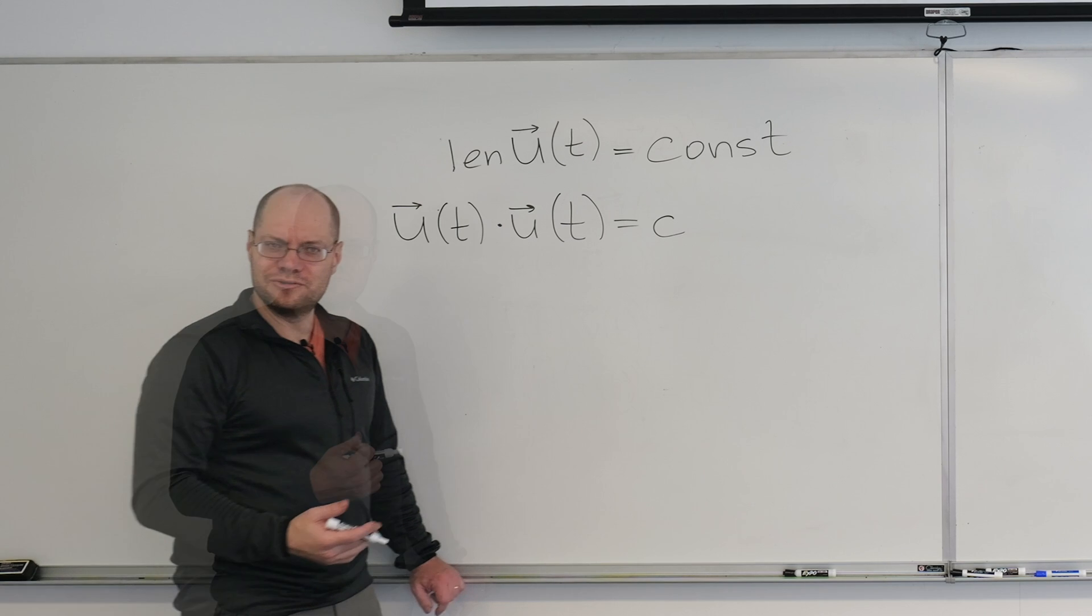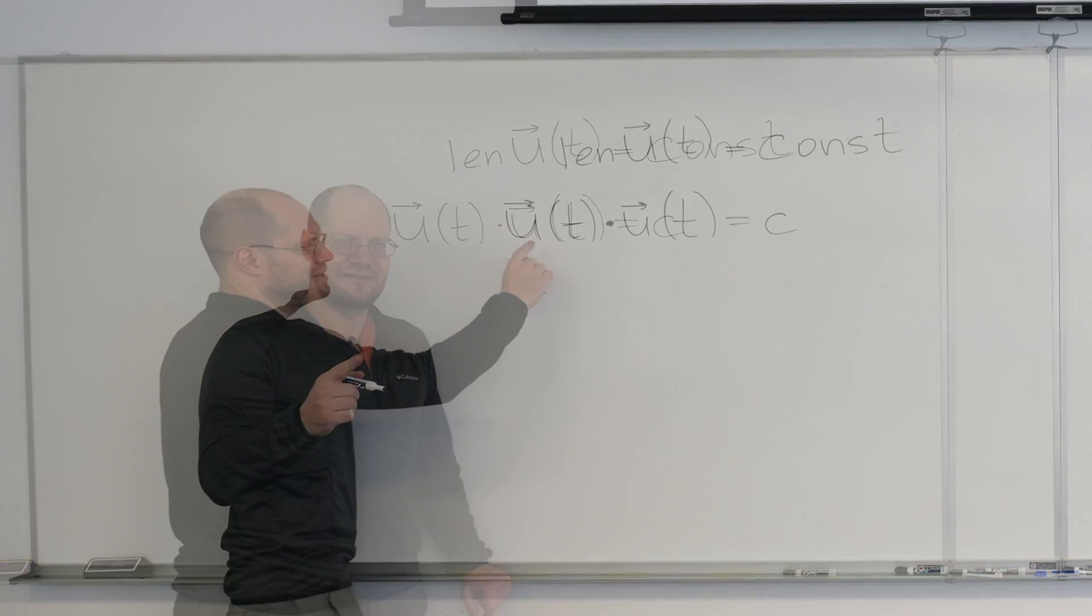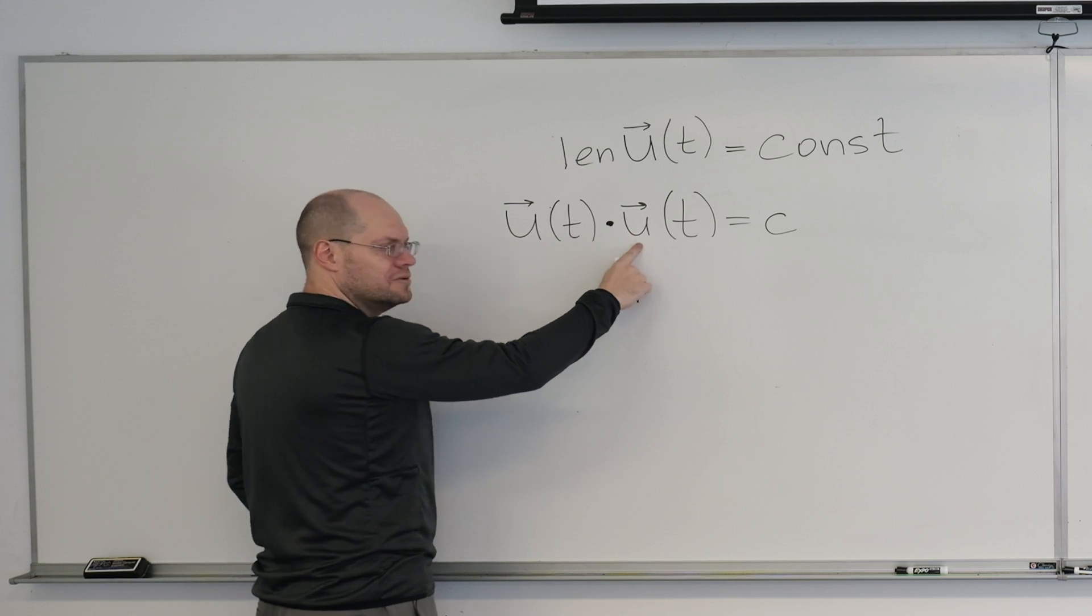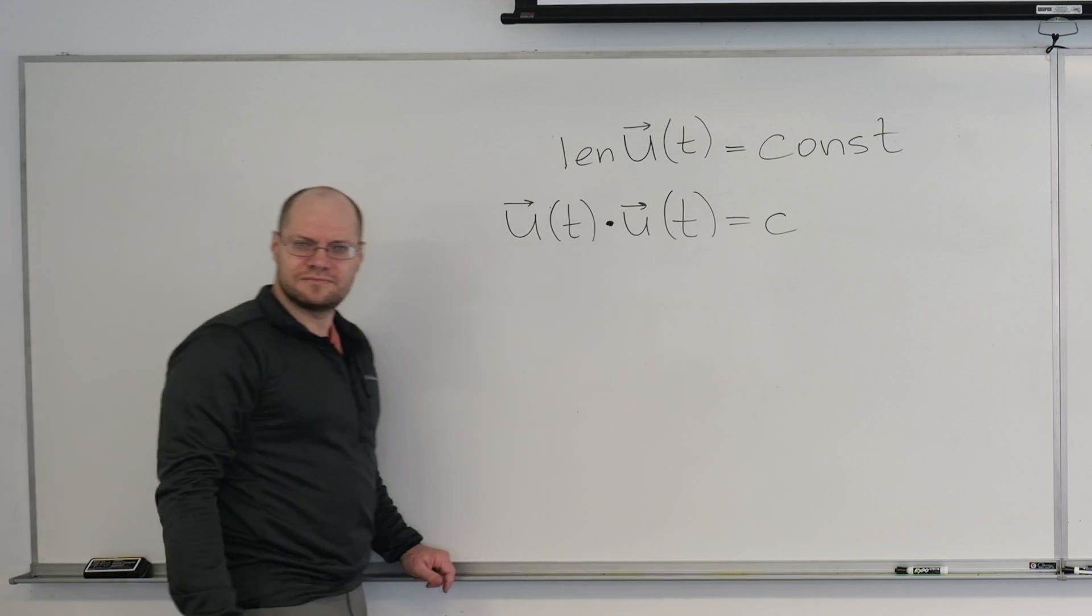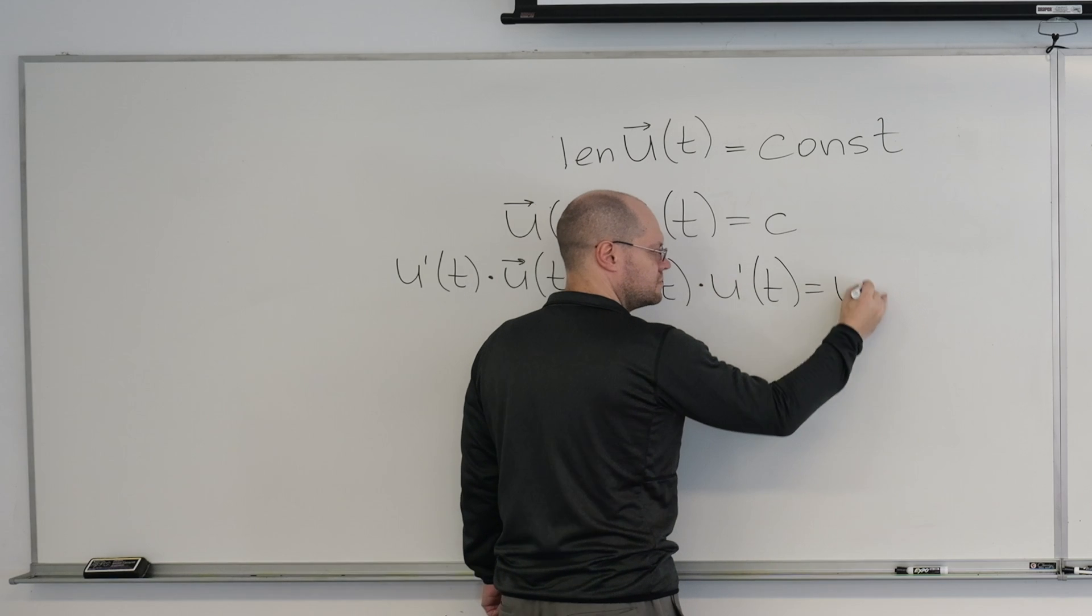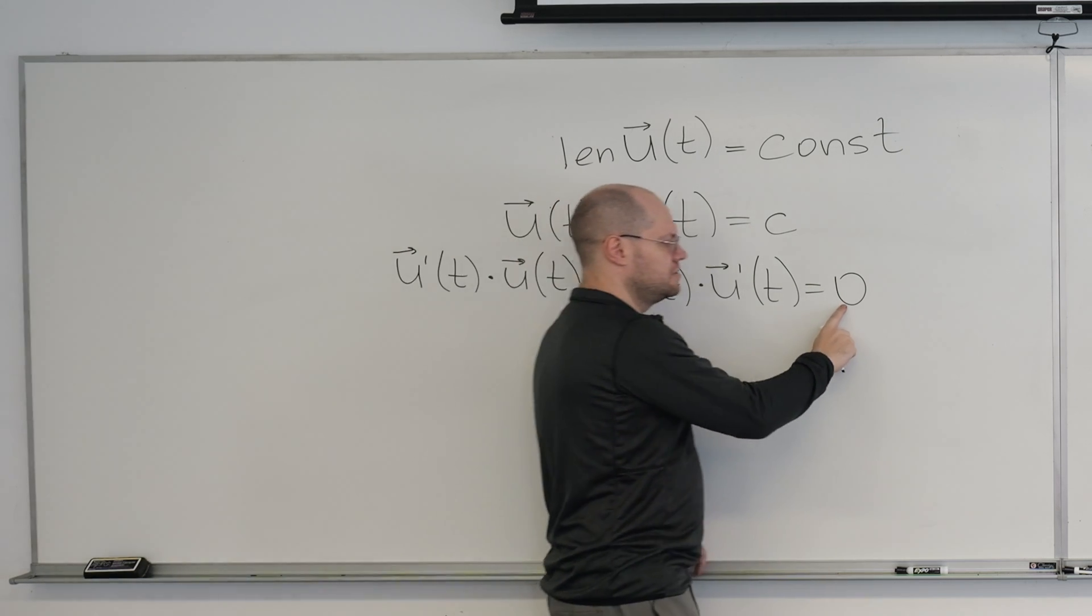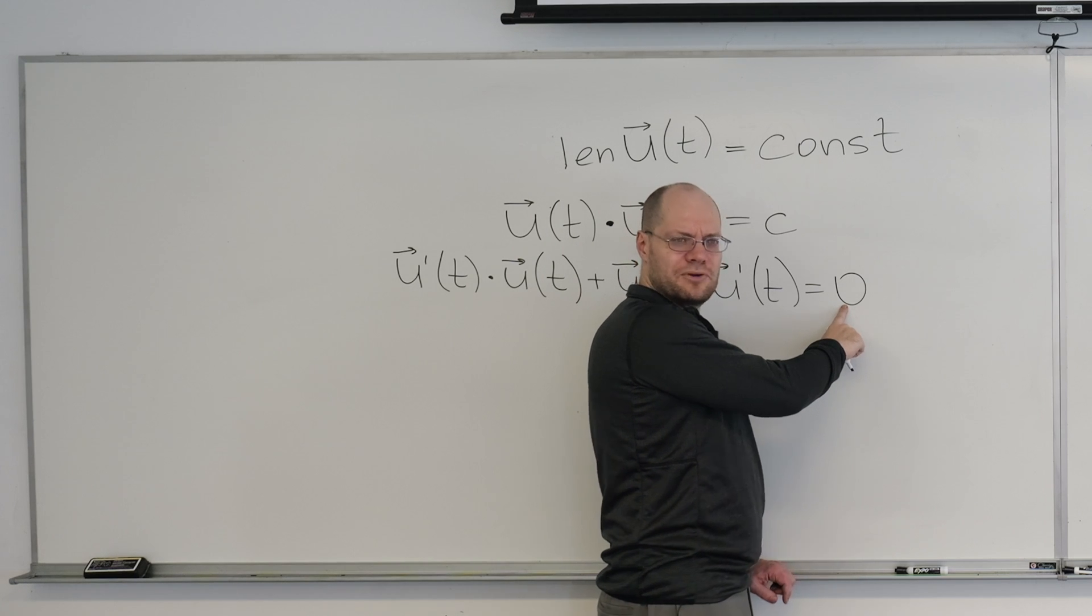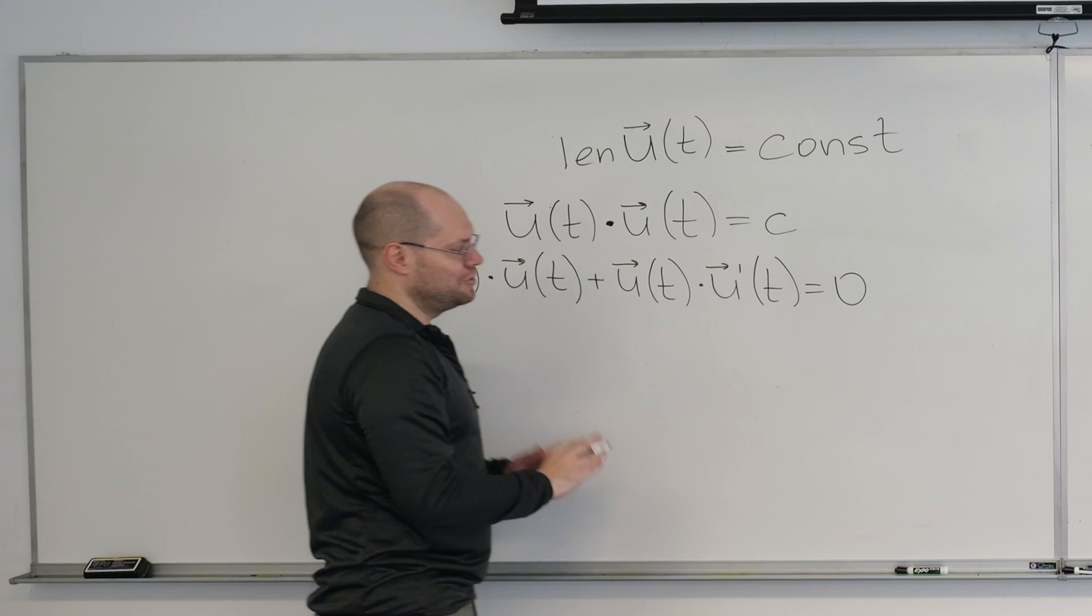What rule are we going to use? Yeah, the product rule, or the dot product rule. So we get u prime dot u plus u dot u prime equals zero. Let's just write it down. Quick question. You see this zero? Is this zero the number or zero the vector? Right, number.